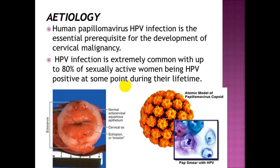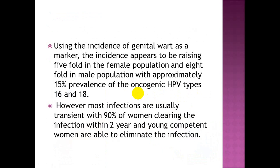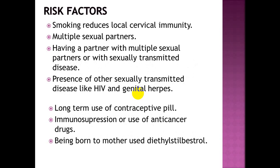Human papillomavirus infection is the essential prerequisite for the development of cervical malignancy. The infection is extremely common, with up to 80% of sexually active women being HPV positive at some point during their lifetime. Using genital wart incidence as a marker, the incidence appears to be rising 5-fold in females and 8-fold in males, with approximately 15% prevalence of oncogenic HPV types 16 and 18. However, most infections are transient, with 90% of women clearing the infection within 2 years.